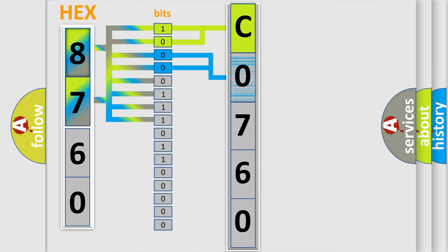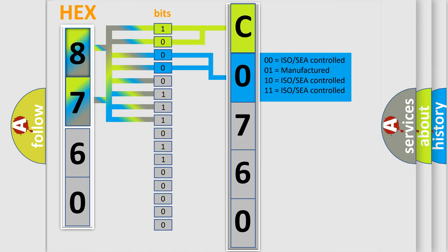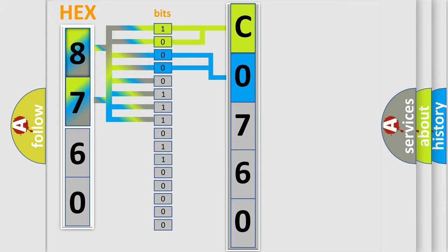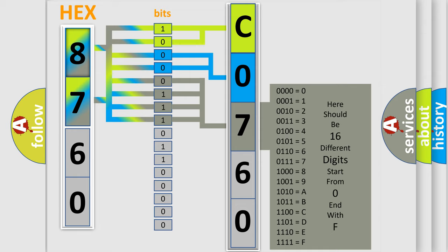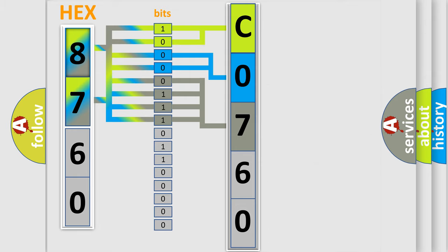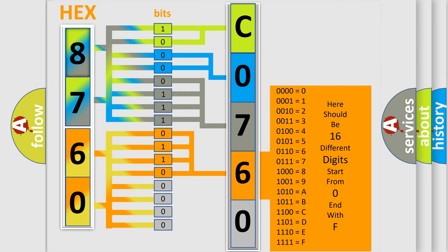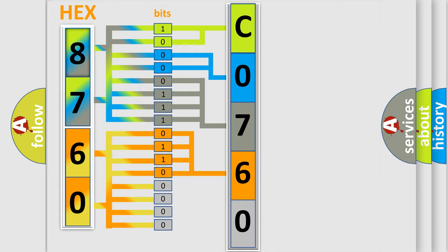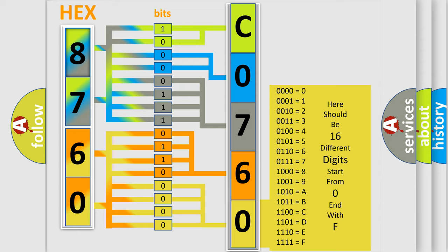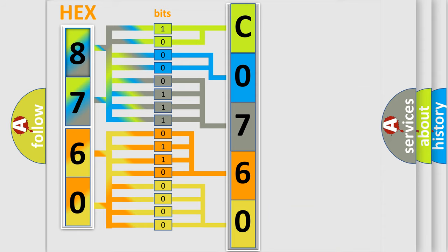The next two bits again determine the second character. The last bits of the first byte define the third character of the code. The second byte is composed of a combination of eight bits. The first four bits determine the fourth character of the code, and the combination of the last four bits defines the fifth character. A single byte conceals 256 possible combinations.